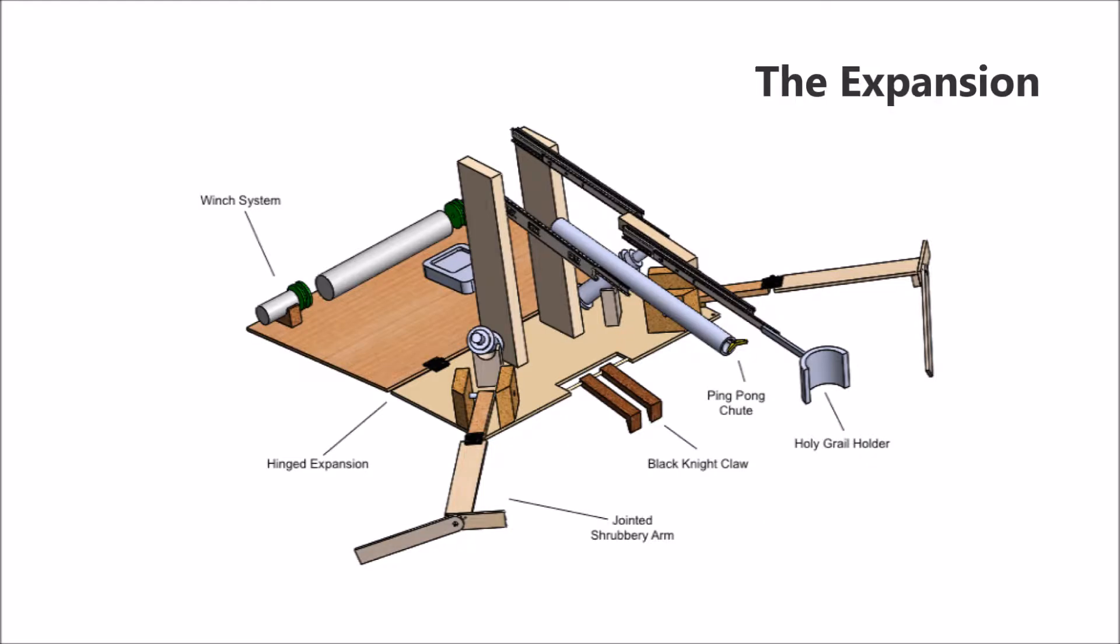Under box number 3 is the Expansion. It makes use of a wide platform to add stability and reach the machine. The platform starts in the upward position and is lowered into place via winches at the back corner of the base. These winches also pull the platform back in at the end of each round.